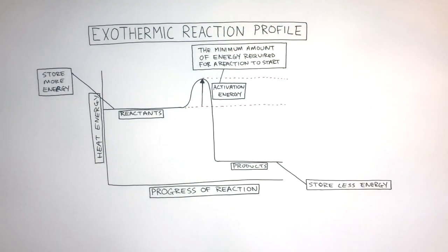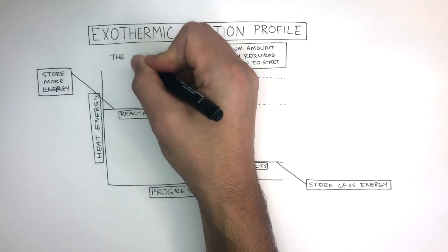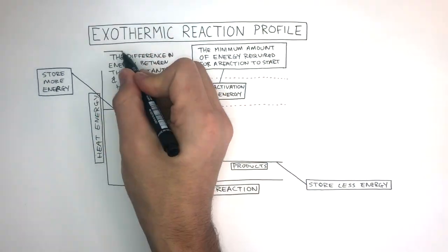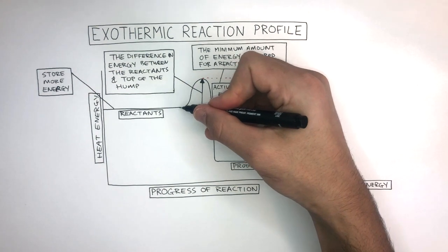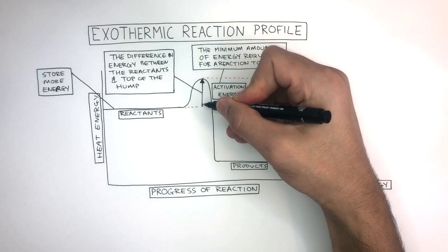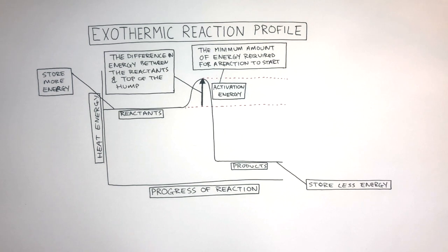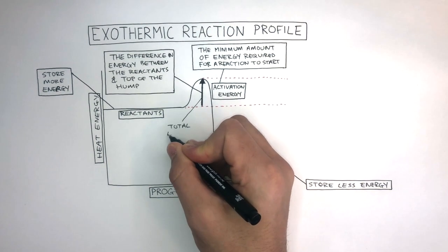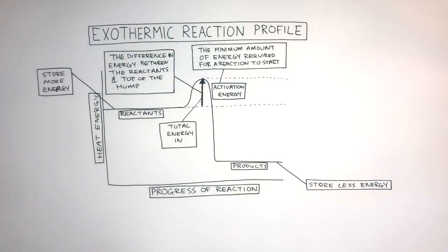The activation energy is found on both exothermic and endothermic reaction profiles. On an exothermic reaction profile it's a much smaller hump, and it can be recognized as the difference in energy between the reactants and the top of the hump — from where the reactants are up to the top of the hump. The activation energy is equal to the total energy in, which is the energy absorbed from the surroundings to break the bonds between the reactants to get the reaction going.